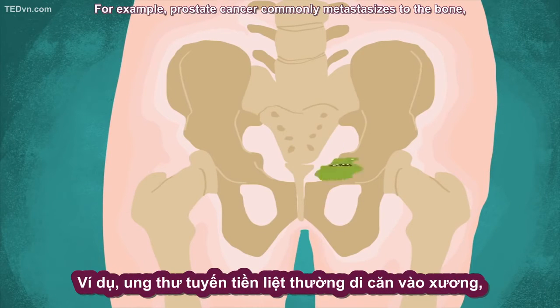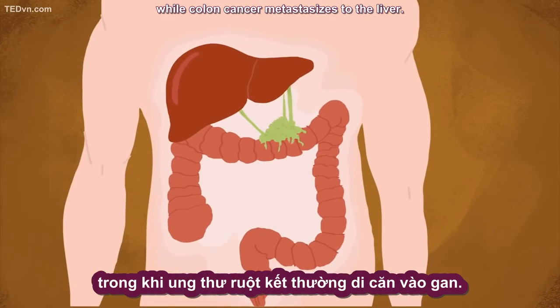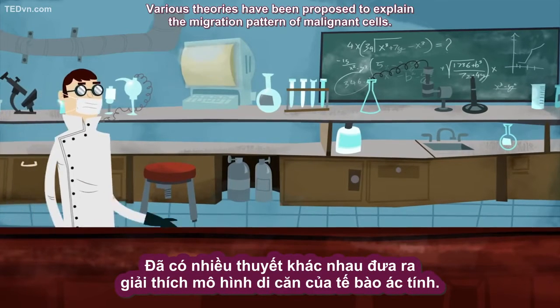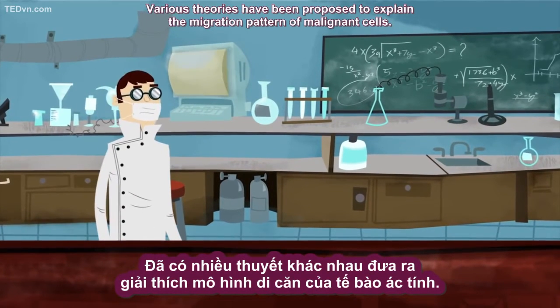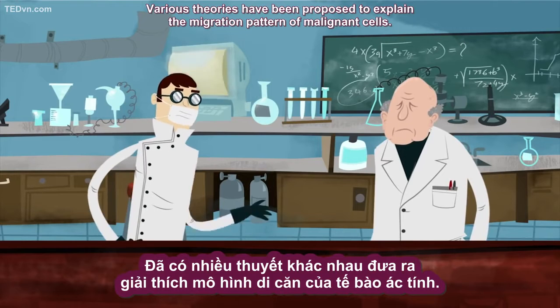Different cancers have been known to have specific sites of metastasis. For example, prostate cancer commonly metastasizes to the bone, while colon cancer metastasizes to the liver. Various theories have been proposed to explain the migration pattern of malignant cells.